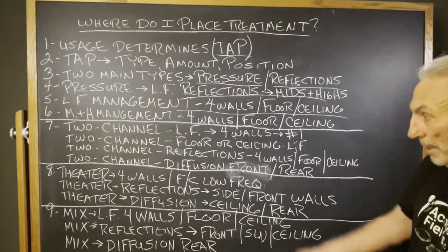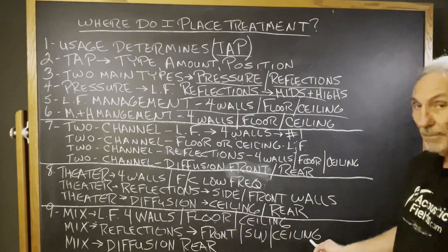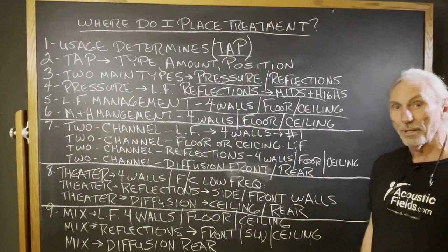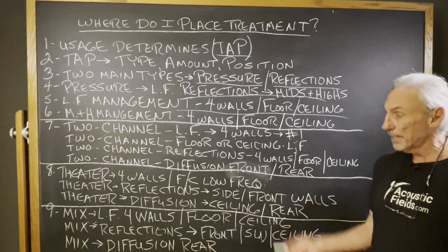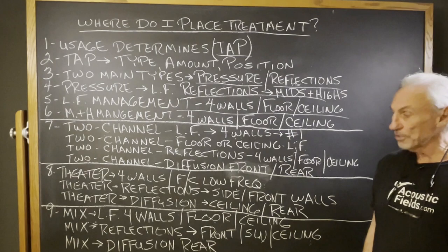For mix rooms, low frequency — four walls, floor, ceiling — is standard in all rooms because we've got those three sound fields. Then we need to manage the reflections off the front, side walls, and ceiling in mix rooms. We have to be really careful because the time signatures of those reflections could be audible in our mix. Then diffusion on the rear wall. I work in a lot of studios in Los Angeles, and those producing a consistently quality product all have diffusion on the rear wall of their mix room — some two-dimensional, some one-dimensional, depending on the distances involved.